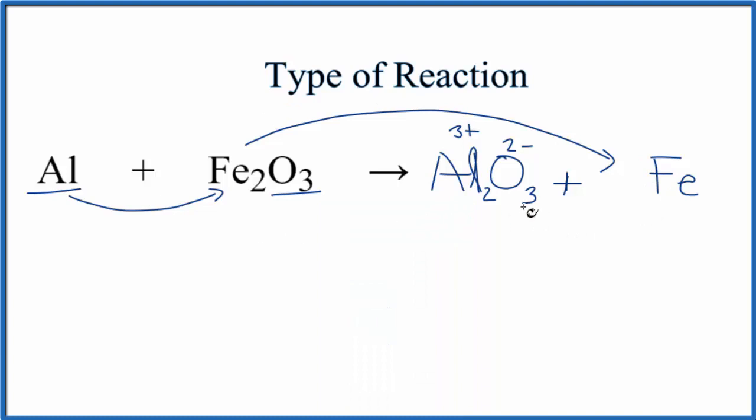I've not balanced the equation. If you need help with that, there's a link at the end of the video and in the description on how to do that. I've also not written the states in. These would all be solids in this reaction. So the type of reaction for Al plus Fe2O3 is a single replacement reaction.